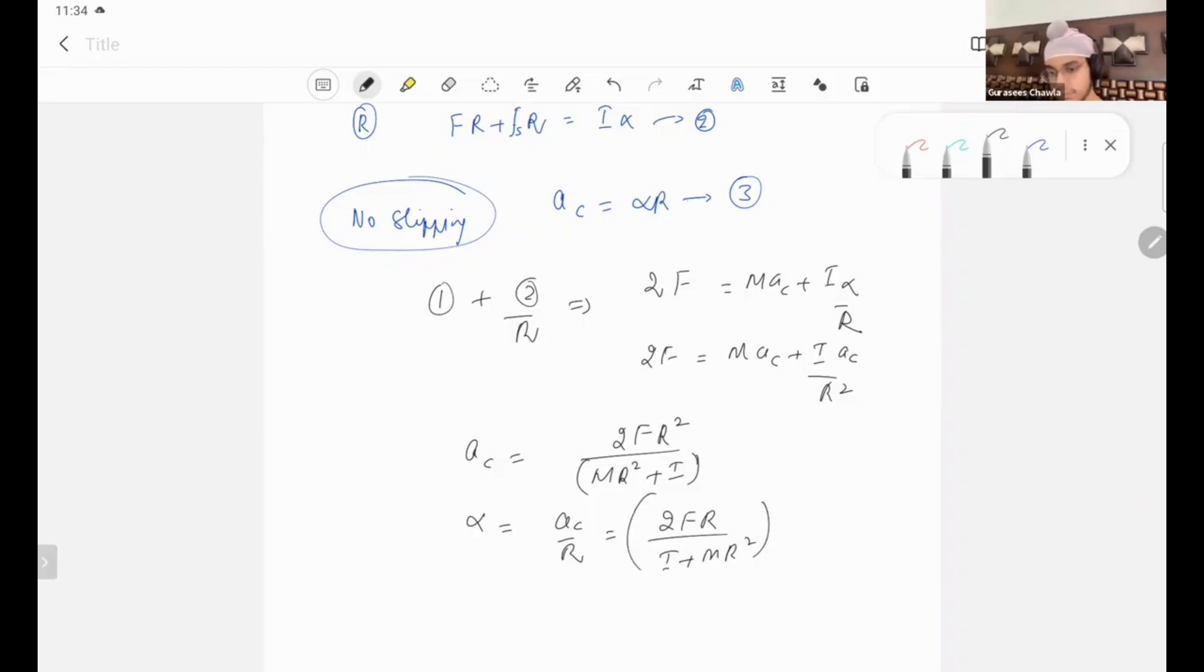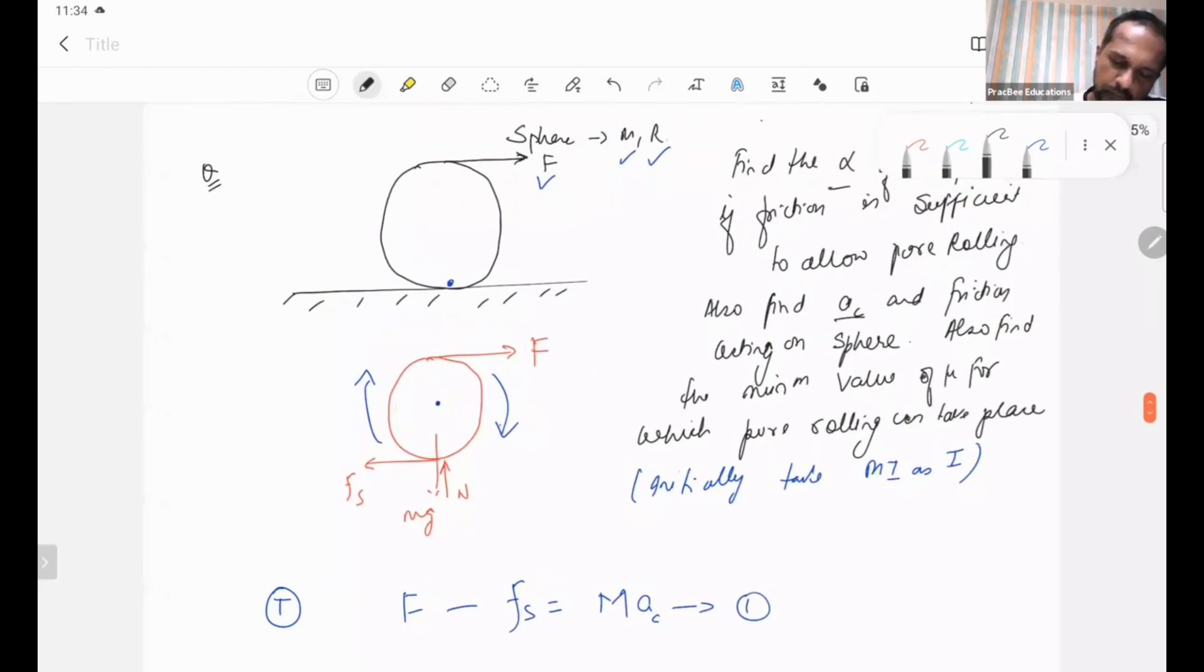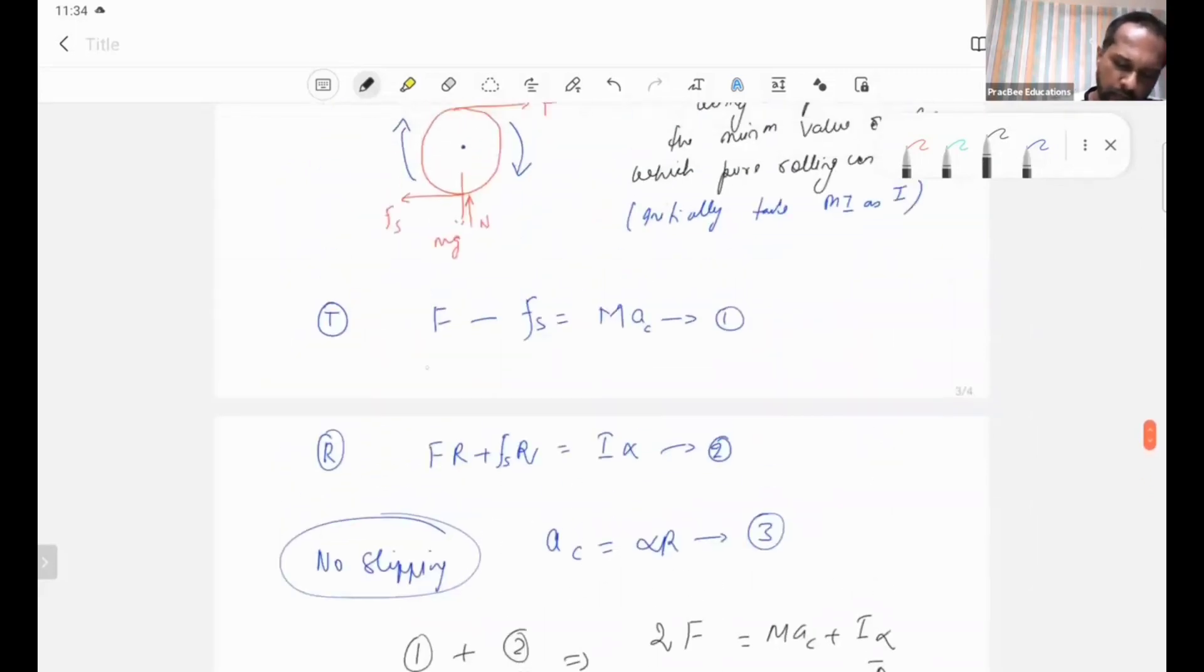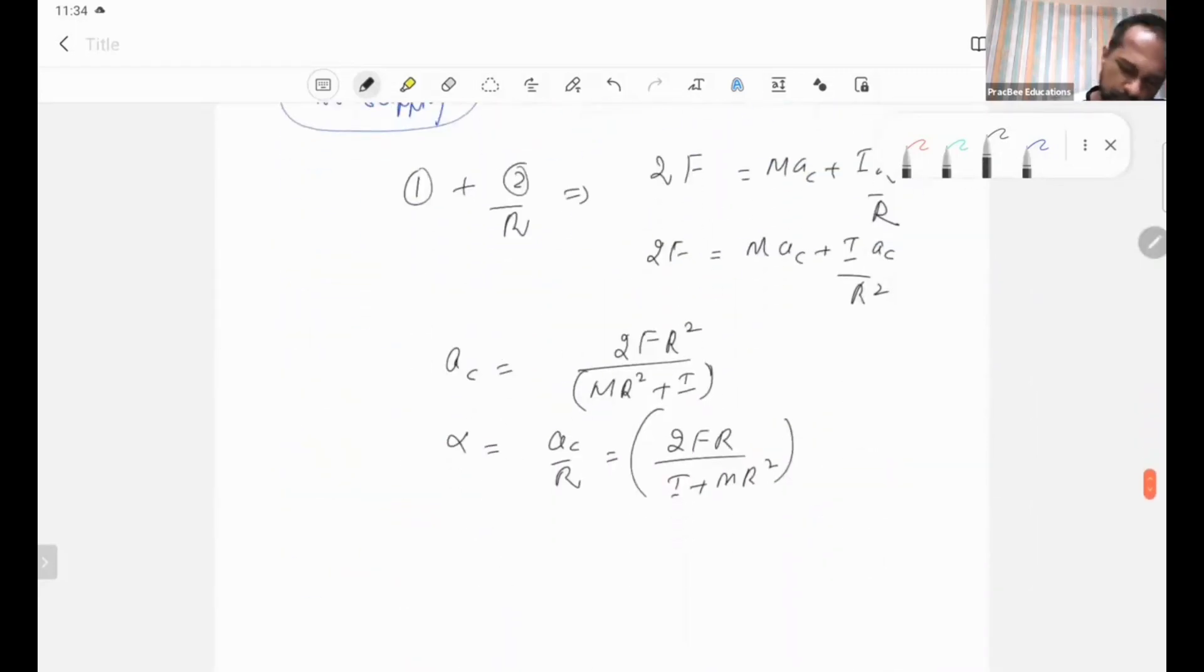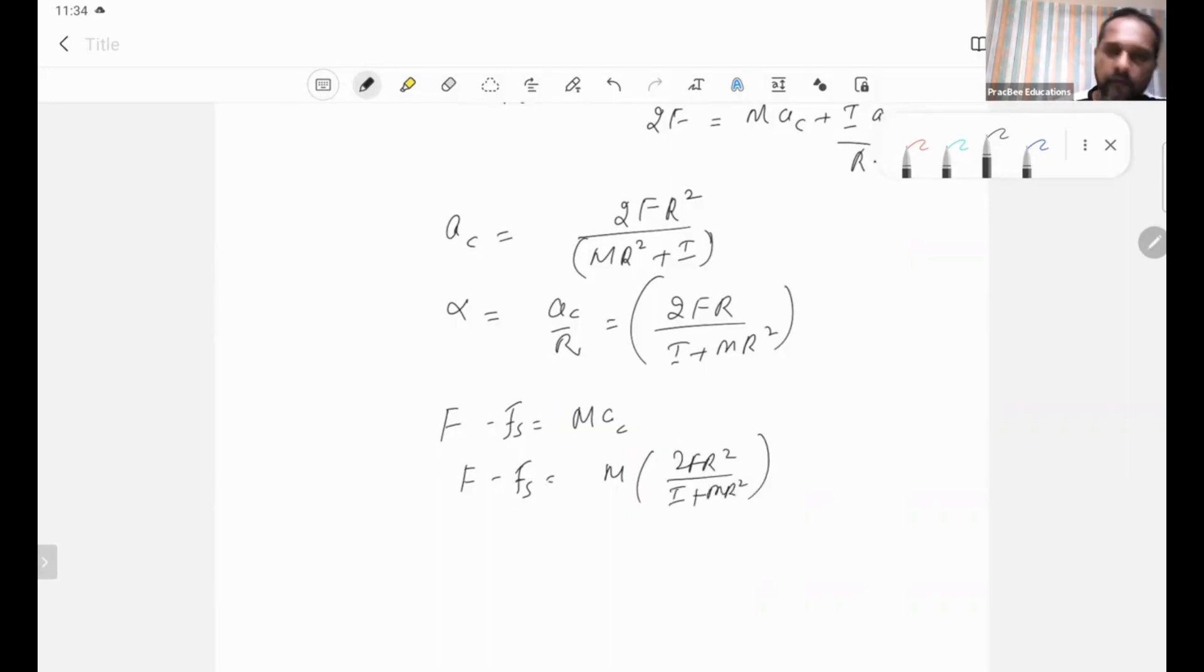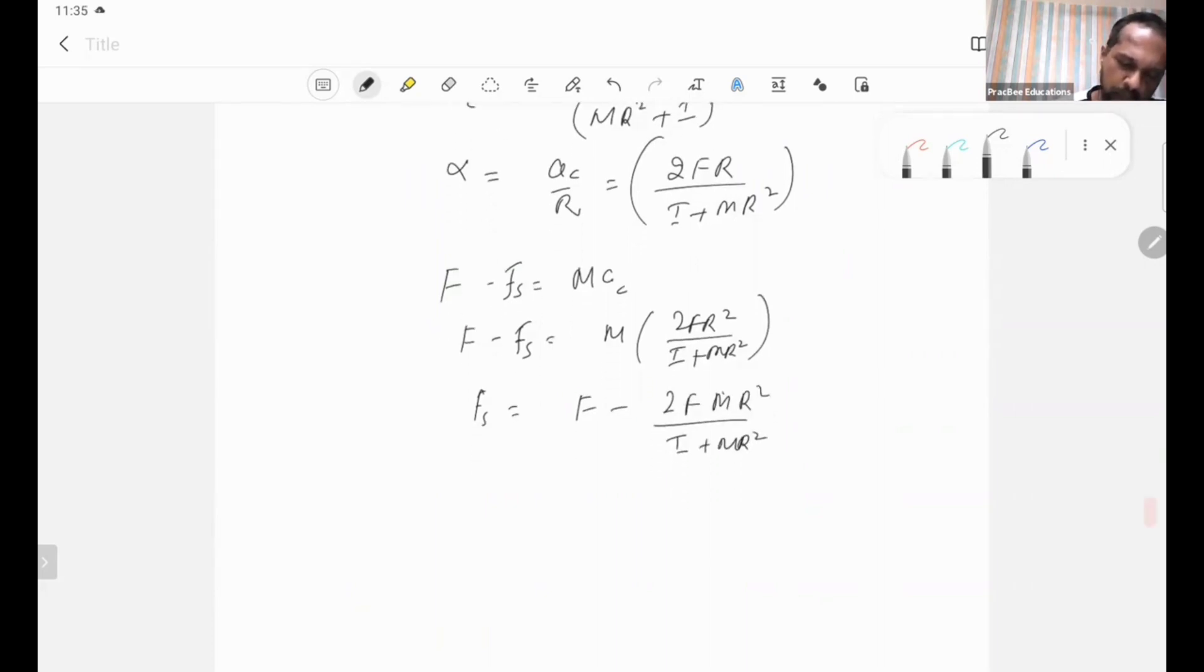Now I have to find out the friction. F minus Fs equals M Ac. So F minus Fs equals M times 2FR squared over I plus MR squared. Fs comes out to be F minus 2F MR squared over I plus MR squared.